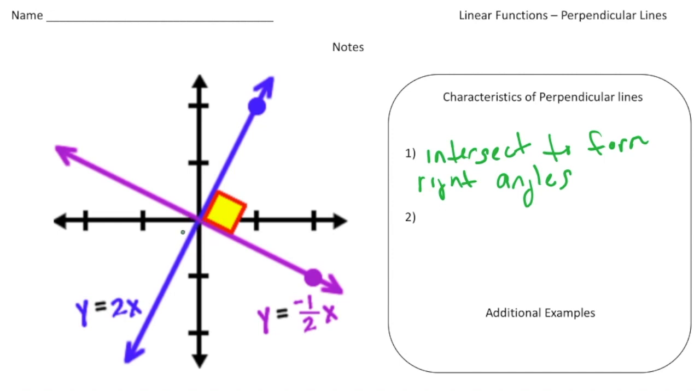Now, a more important characteristic is that the slopes are the negative reciprocals of each other. So let's write that down first, then I'll explain it. So the slopes are the negative reciprocals of each other. Alright, so let me show you an example.